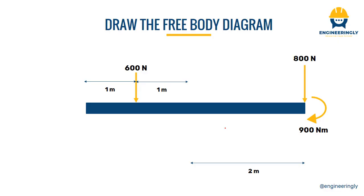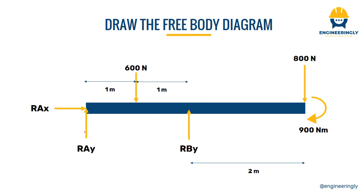First of all we have to draw the free body diagram of the structure. What we mean by a free body diagram is that we will remove the actual supports and replace them with the types of reactions they are producing. For example, the support at point A was a pin support — it will have a reaction in the x direction and a reaction in the y direction. The support at point B was a roller support and will only have a reaction in the y direction.